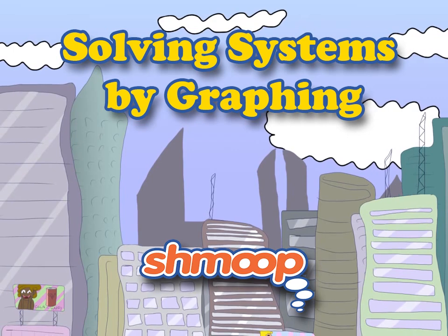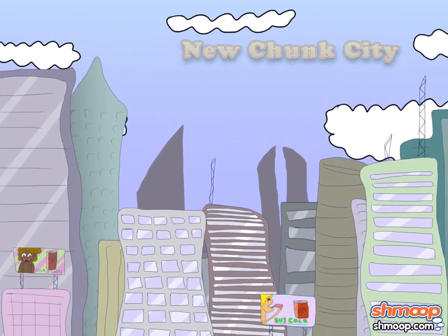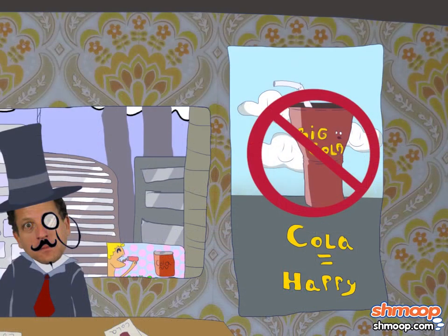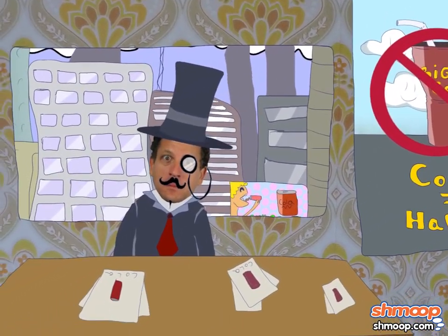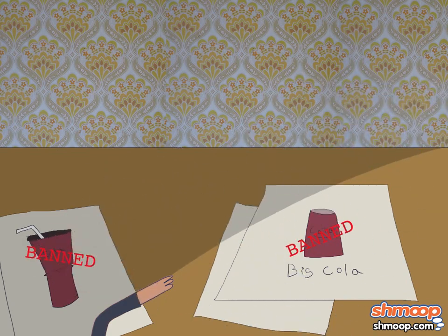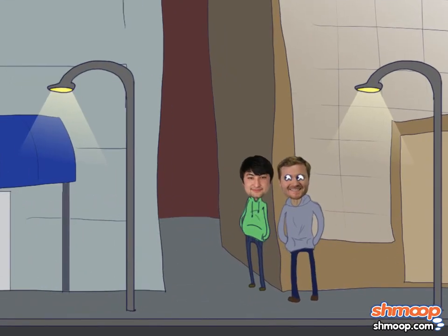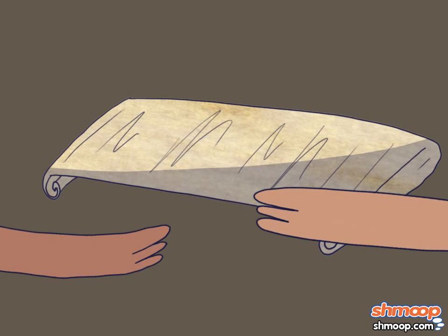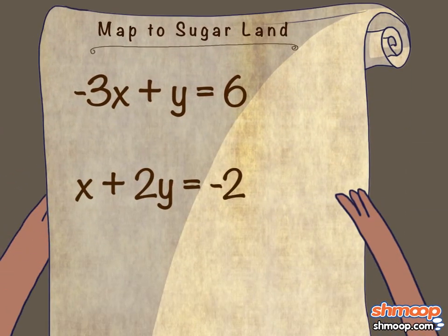Solving Systems by Graphing, a la Shmoop. The mayor of New Chunk City has banned all sugary beverages larger than 64 ounces. You've heard from a friend that Black's Market is selling 64-ounce sodas in the alleyway behind the store. Unfortunately, you don't know where Black's Market is, and all you have are a couple of cryptic equations leading the way there. Graph the equations, and they'll provide you with the coordinates to sugar overload.